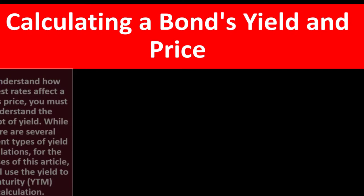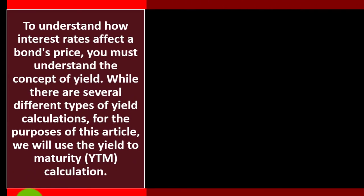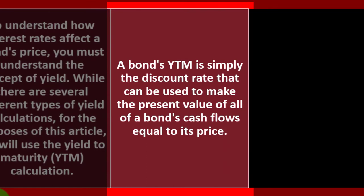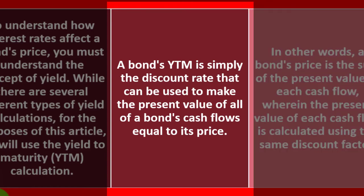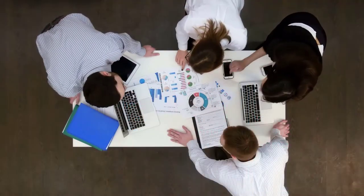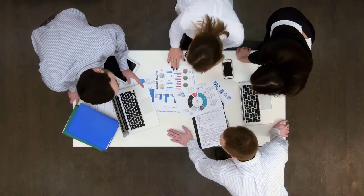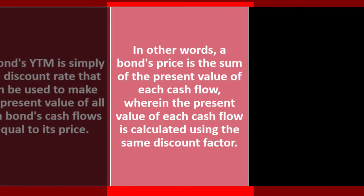For the remainder of this discussion we'll use U.S. Treasury bonds, eliminating credit risk and focusing on inflation risk. To understand how interest rates affect a bond's price, you must understand yield. We'll use the yield to maturity (YTM) — simply the discount rate that makes the present value of all the bond's cash flows equal to its price. A bond's price is the sum of the present value of each cash flow, all calculated using the same discount factor.